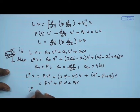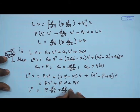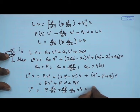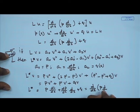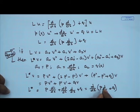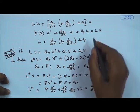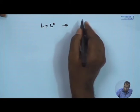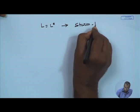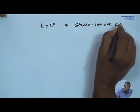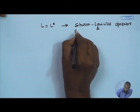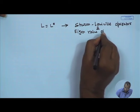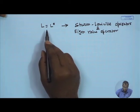L* is p d²/dx² + dp/dx · d/dx + q, which equals d/dx[p d/dx] + q. So L = L*, confirming the general Sturm-Liouville eigenvalue operator is a self-adjoint operator, where L = L*.